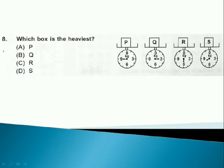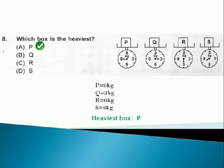Which box is the heaviest? Answer is option A. As P is 9 kg, Q is 3 kg, R is 6 kg, S is 8 kg. So the heaviest box is P.